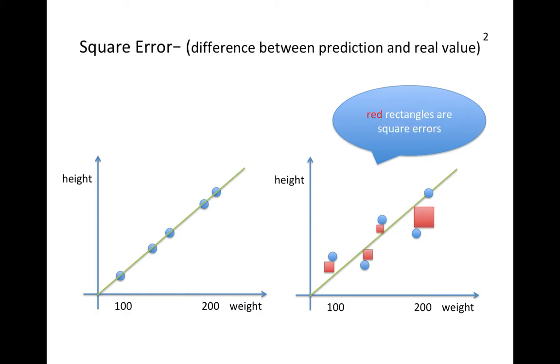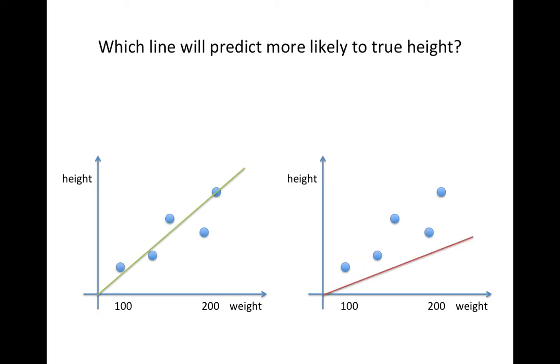Instead of distance, we can use square error so we can exaggerate errors to our naked eyes and enable easy gradient calculation in later steps.